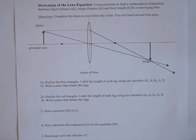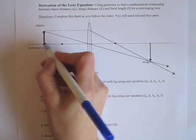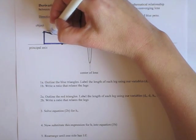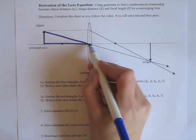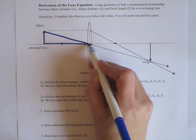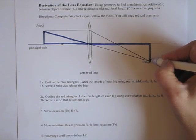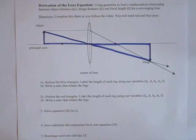We're going to use geometry to come up with this equation. The first step is to outline two triangles in blue. The first triangle includes the object, this distance, and this hypotenuse. The other blue triangle is a similar triangle to this one. So outline those triangles in blue.